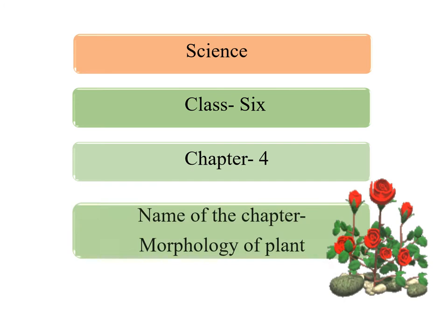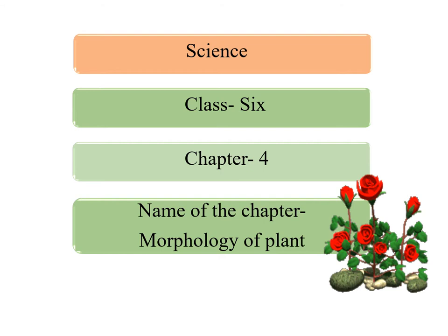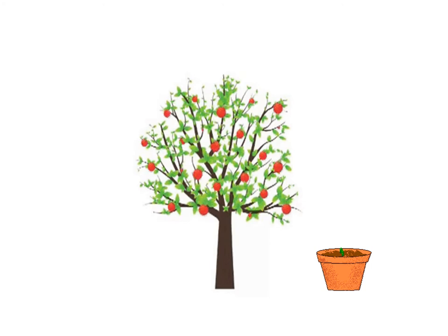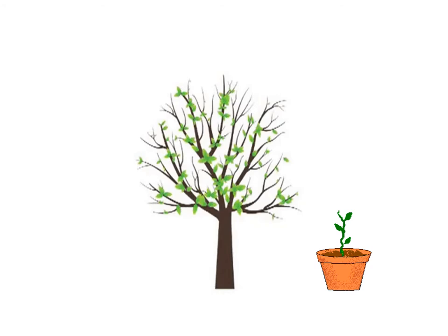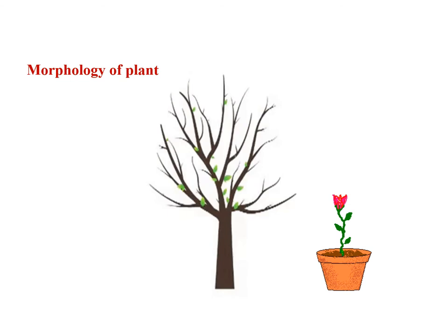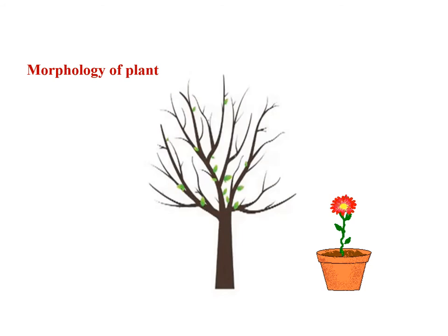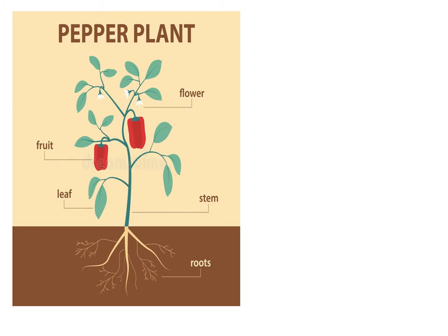Today I will discuss a new chapter — Chapter 4: Morphology of Plants. We have already learned about the characteristics and classification of plants. You have also learned that higher plants can be divided into two types: gymnosperms and angiosperms. In this chapter we will learn about the external features of angiosperms, considering them as the ideal plants. We will also learn about the location of different parts of a flowering plant.